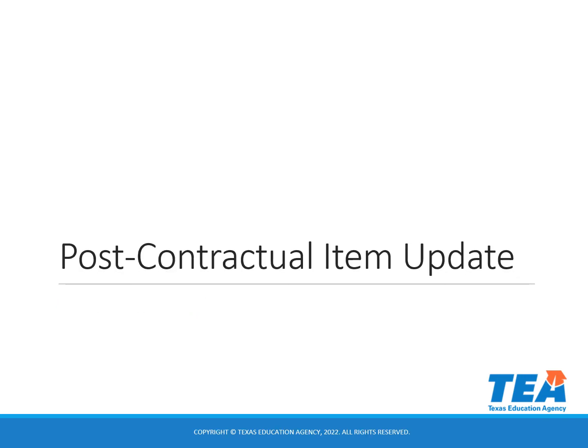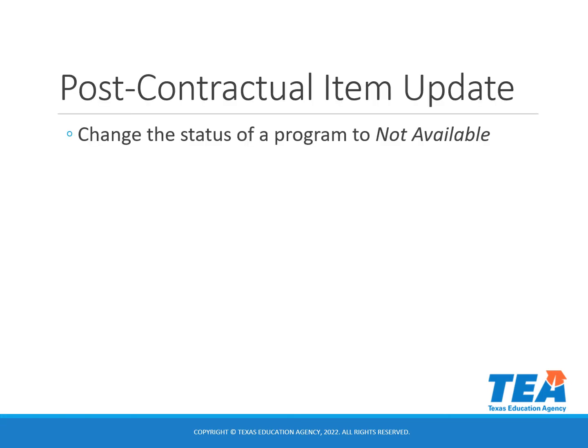First, I will go over post-contractual item updates. The post-contractual item update link can be used to change the status of a program to not available. This status means that you cannot receive any new orders for these programs through EMAT. You must continue to honor previous purchases and provide all materials purchased for the length of time originally indicated on the bid.